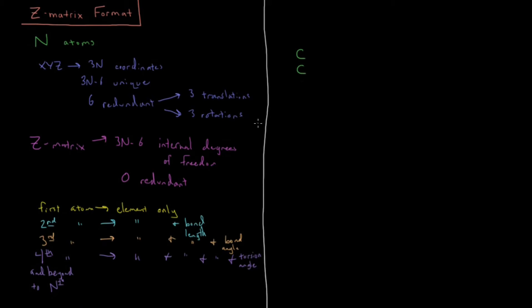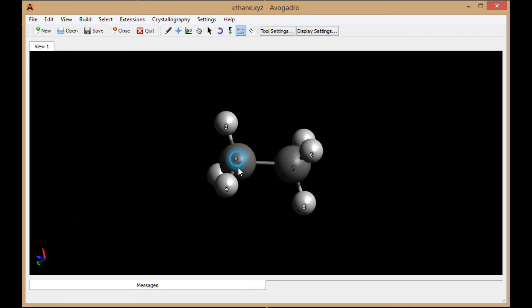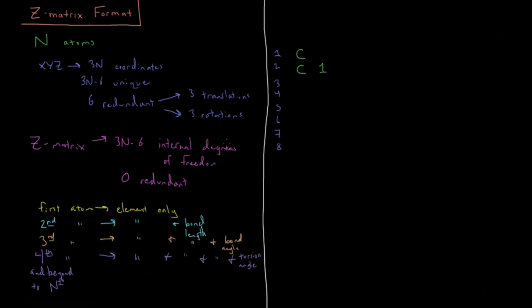Then our second line is going to be C, the next carbon. Our second atom is going to be C, and then one, because it's bonded to atom one, the carbon. And that bond length, if I measure it in Avogadro, is 1.512 angstroms. So let me put that at 1.51.